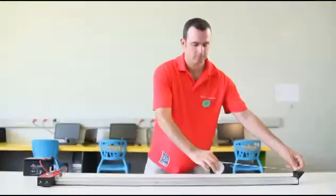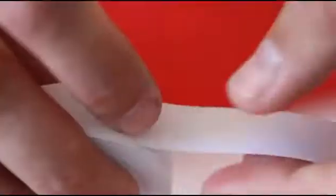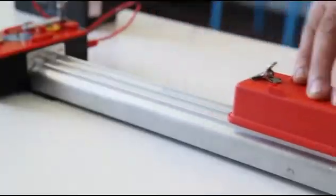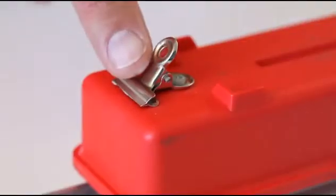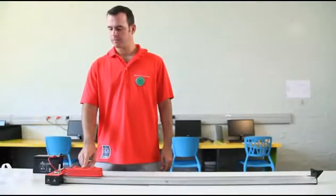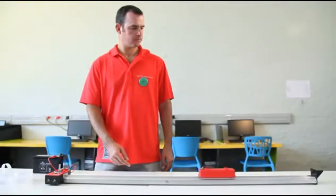Measure out the ticker tape so that it is slightly longer than the length of the track. Place the trolley onto the track, making sure the clip is facing the ticker timer. Give the trolley a practice gentle thrust so that you can feel how hard you will need to push it to reach the end.